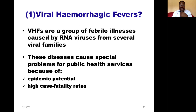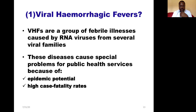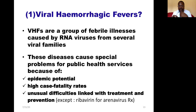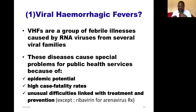Most viral hemorrhagic fevers have a high case fatality rate, meaning they can result in high mortality and morbidity. There are challenges in terms of management — we don't have specific treatment and rely on infection prevention and control measures, except for a few like the arena virus, where we can use ribavirin as a specific treatment, as discussed in part one.